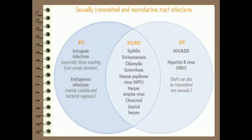Now classification. As mentioned, STD and RTI are overlapping categories. Some disease conditions indicate both STD and RTI, as their mode of transmission is sexual and they also refer to the site of infection in the reproductive tract. These include syphilis, trichomoniasis, chlamydia, gonorrhea, human papilloma virus, herpes simplex virus, chancroid, and genital herpes. RTIs also include iatrogenic infections resulting from treatment during hospital care, especially from unsafe abortion; and endogenous infections — within the body — mainly candida and bacterial vaginosis. STDs include HIV, AIDS, and Hepatitis B virus. Note that both can also be transmitted non-sexually.